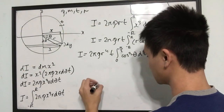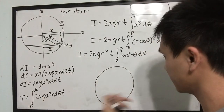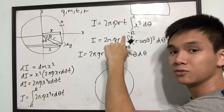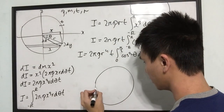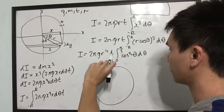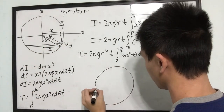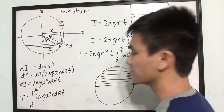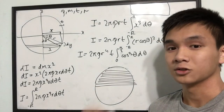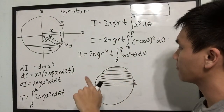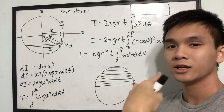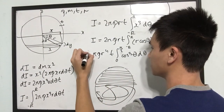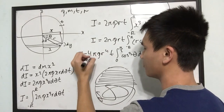Why did I choose these limits? If I redraw my circle: if you integrate from 0 to π/2, you're adding up differential regions covering only half the circle. So what I'll do is multiply the whole thing by 2 to account for the other half. This becomes a factor of 2 times 2, giving 4.